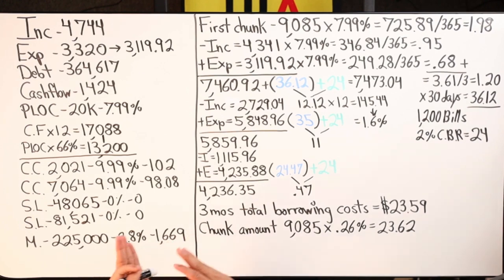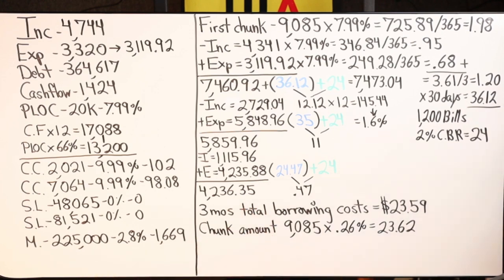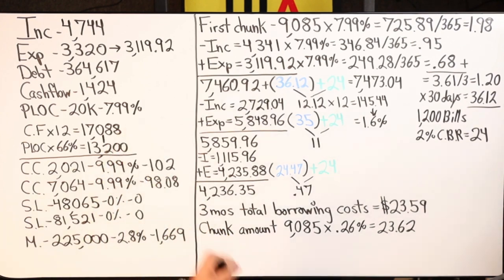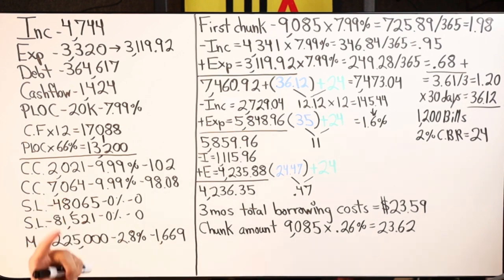Seven point nine nine to two point eight would not make sense if they were at the tail end of the mortgage — say ten or fifteen years left — because the bank has already made the majority of its interest in the first ten years of the thirty-year loan. That's when seven point nine nine wouldn't make sense relative to two point eight. By then we'd want to upgrade the PLOC to a HELOC — home equity line of credit in the first or second position — if we wanted to continue velocity banking to pay off all the debt.